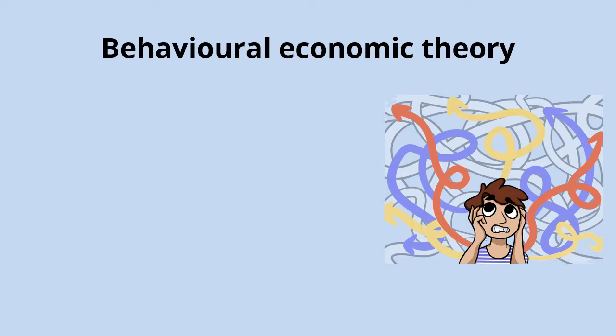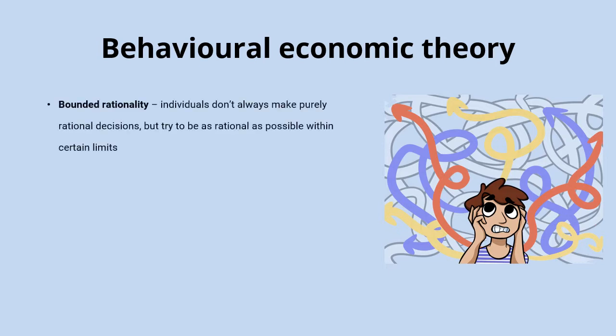This idea of homo economicus and the more modern field of behavioural economics, which was pioneered by economists and psychologists like Daniel Kahneman, Amos Tversky and Richard Thaler, smashed this way of thinking apart. Some of the theories of this field include the idea of bounded rationality.